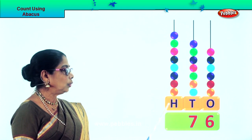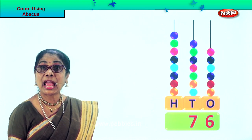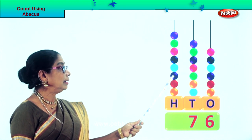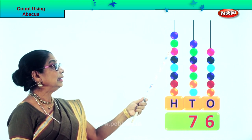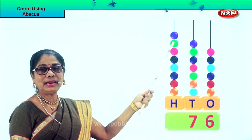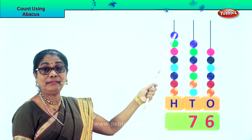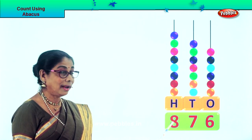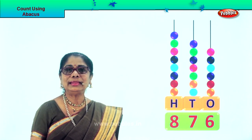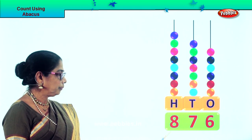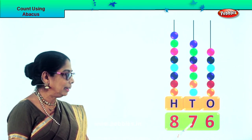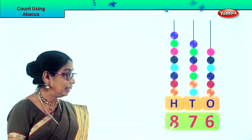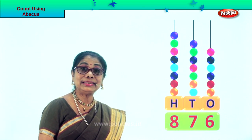Now we go to the 100s and count in 100s: 100, 200, 300, 400, 500, 600, 700, 800. So we write down 8 here — that is 800. Now we will read the sum together: 876. What is this number? 876.